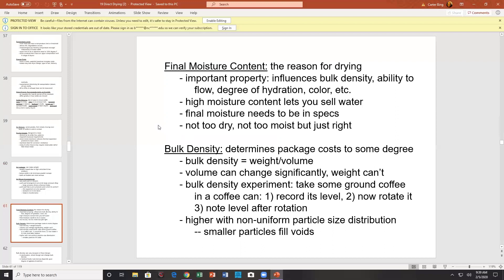Final moisture content. Obviously, this is one of the major reasons why you're drying. Influences bulk density, ability to flow, degree of hydration, color, etc. High moisture content lets you sell water. And final moisture content needs to be in specs. Bulk density. Very important, my coffee. Experiment on bulk density. Ground coffee, half full, rotate to record its level. We're now rotated. Note the level after rotation gives you the concept of bulk density.